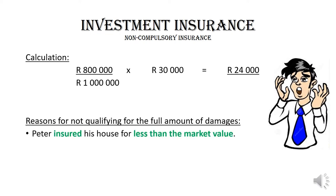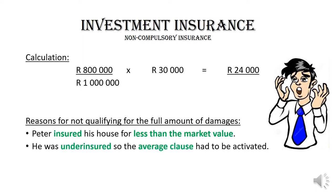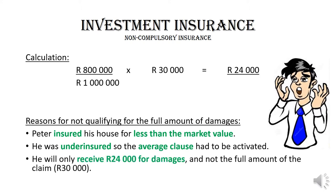Peter did not qualify for the full amount of damages because he insured his house for less than the market value. His premiums were lower because he insured it for a lower amount, so he had not been paying to receive a payout of one million rand. The insurance company used the average clause to calculate proportionally how much of the damages they would cover. The insurance company will pay 24,000 rand and Peter will have to pay the remaining 6,000 rand himself.